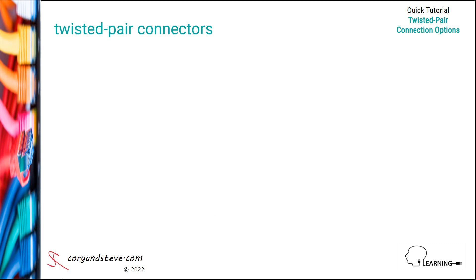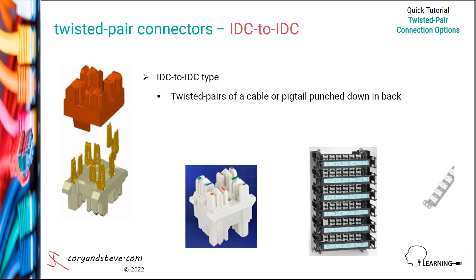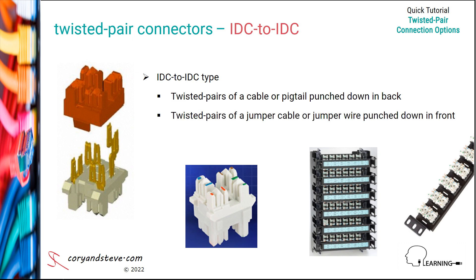A less common type of twisted pair connector is the IDC to IDC type, where we punch down the twisted pairs of a cable or pigtail in the back and also punch down jumper cable or jumper wire in the front. This type of connection is not as widely used as the modular or RJ45 type, mostly due to the slower installation time and the need to always use a tool to punch down jumpers when making changes, instead of simply pulling out and inserting modular plugs.